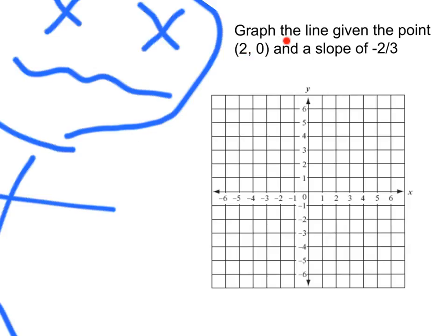Alright, here we want to graph the line given the point 2, 0, and a slope of negative 2 thirds. First, since we know our point is 2, 0, let's start by putting a point right at that spot, 2, 0. Using that point, now I can take my slope, which is negative 2 over 3. I know slope is rise over run. That's a rise of negative 2 and a run of 3. And I can start from this point and go from there.